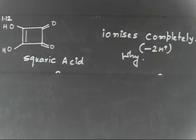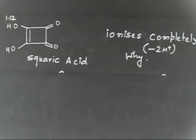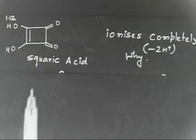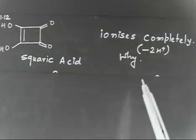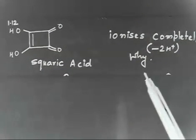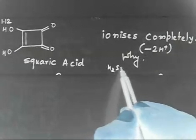Okay, let us copy this problem. This acid is called squaric acid, and it is a very strong acid. It ionizes completely, something like H2SO4, and gives 2H+. It can lose one H+, and it can also lose another H+, so it can lose 2H+ total, and it ionizes completely like H2SO4.